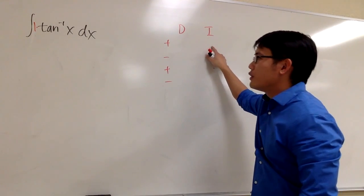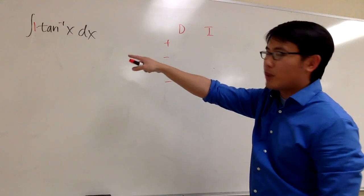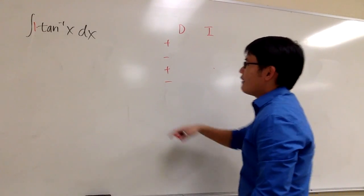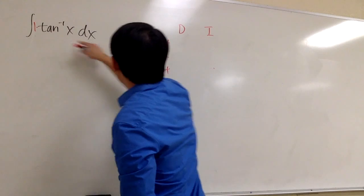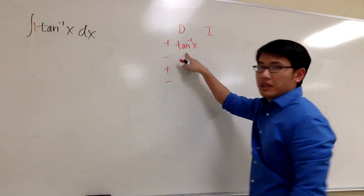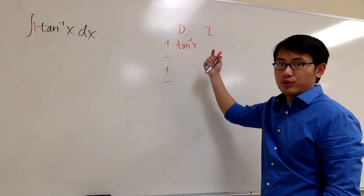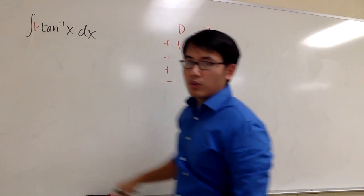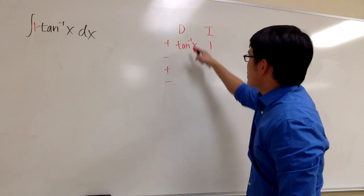Should we put the inverse tangent for the I? No, because that's exactly what we're trying to do. We don't know how to do that yet. Ok? So we have no choice but put the inverse tangent x into the D column. So I'm going to differentiate the inverse tangent. I can do that. So for the I, I'm going to put the 1.